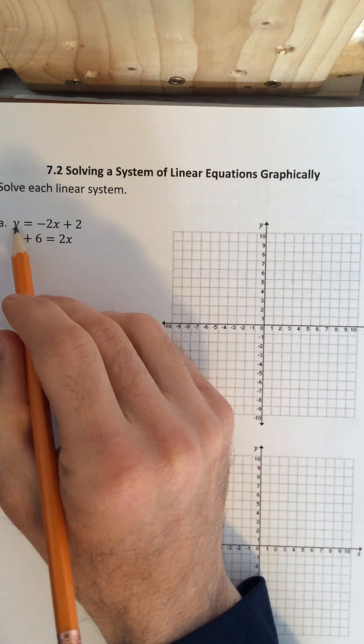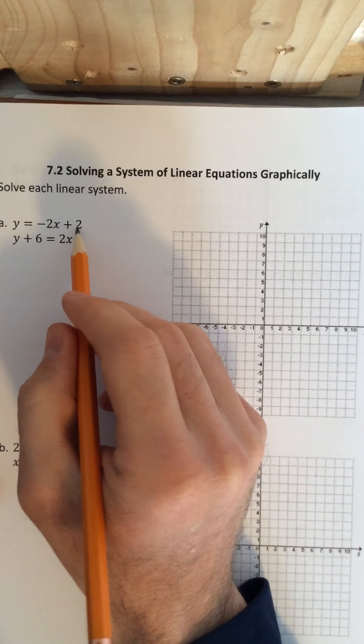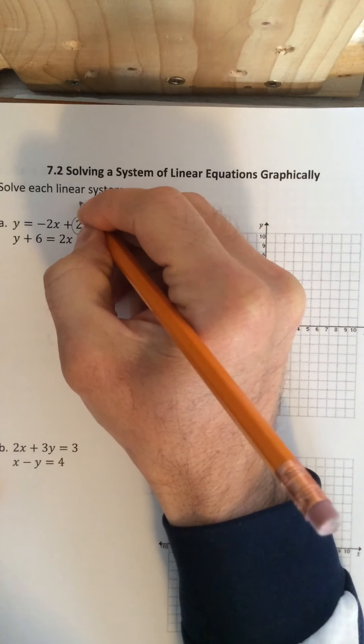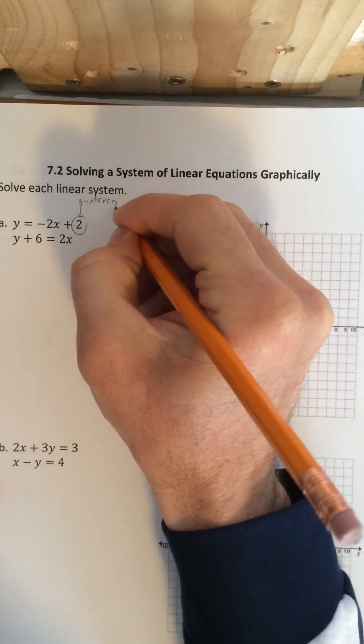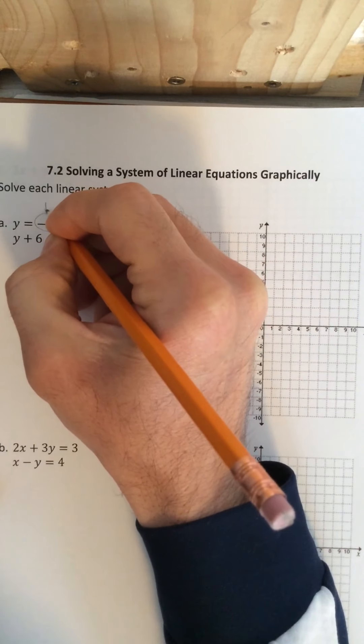So if you look at this first equation, y equals negative 2x plus 2. Positive 2 represents our y-intercept, if you recall this, and negative 2 represents our slope.